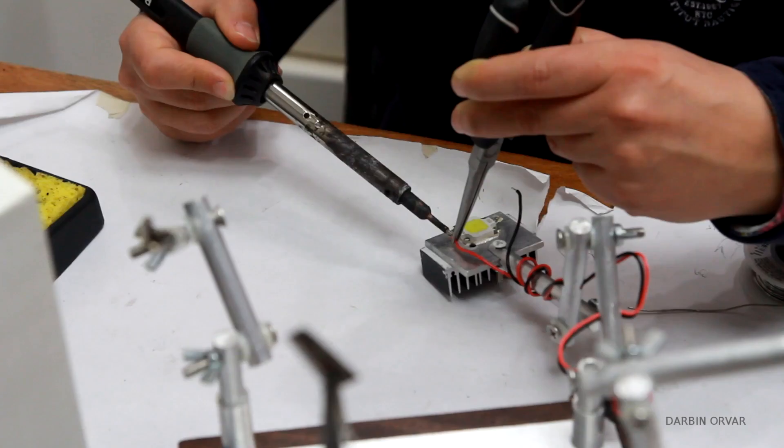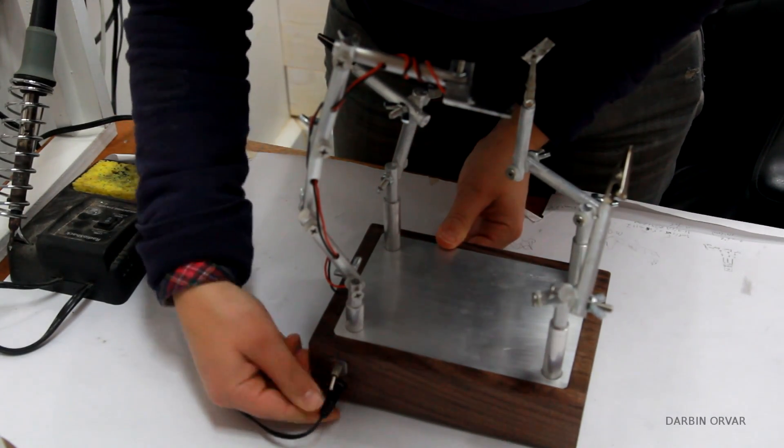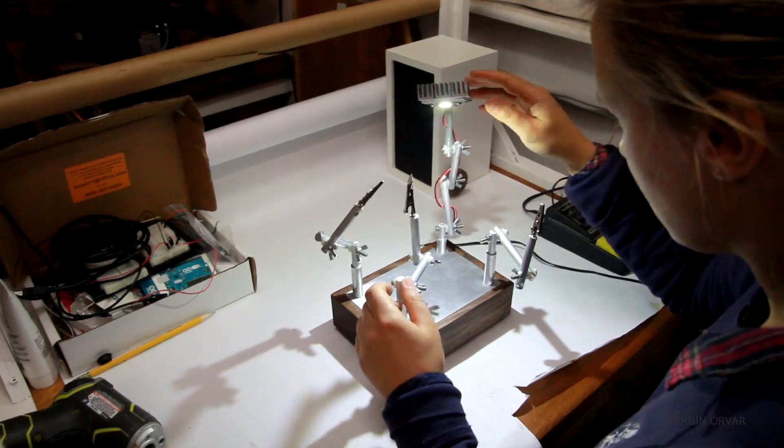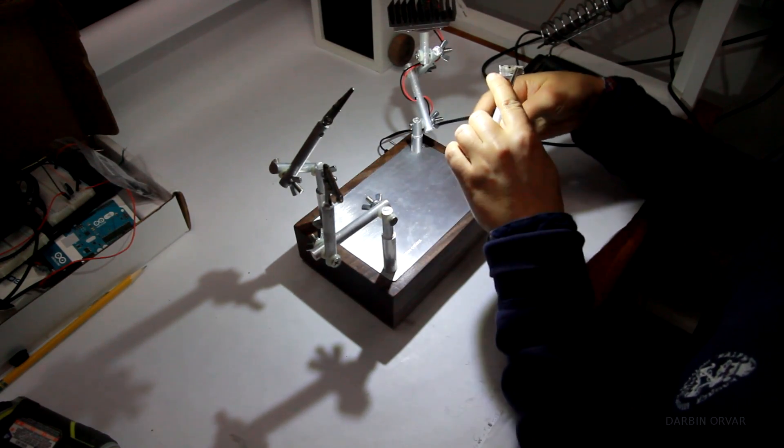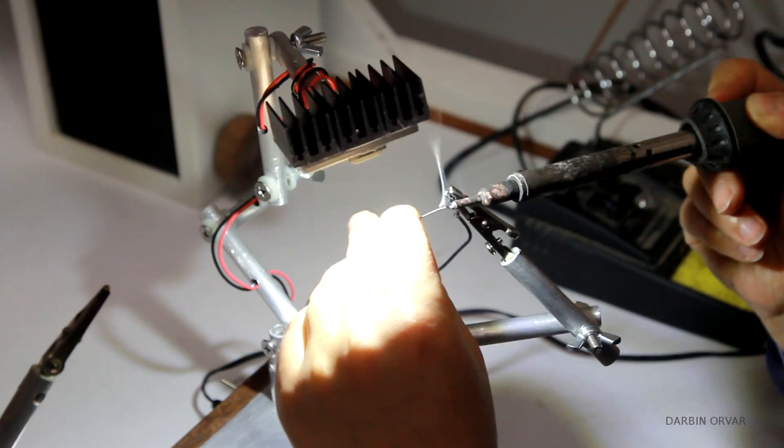Then finally I'm soldering the light on. Let's plug it in and see if it works. Okay and you can move the arms around, move the light around, place it wherever you need. And of course this is really nice to have when you want to hold something in place for soldering or whatever.